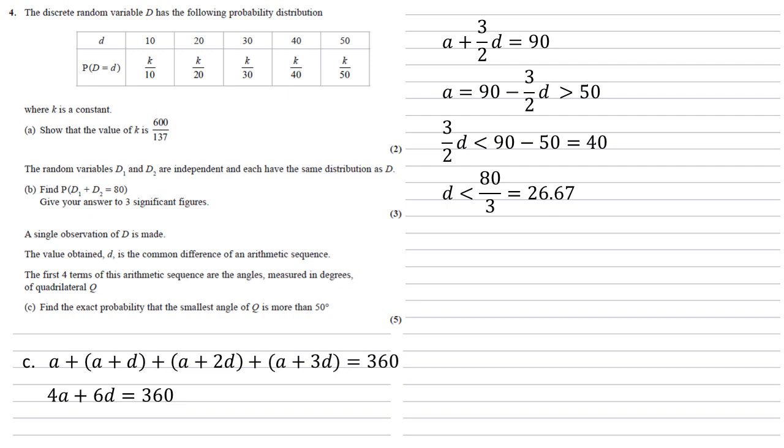There are only two angles that this can then be. So if we look at our table, D has to be 10, 20, 30, 40 or 50. If it's smaller than 26.67, it must be 10 or 20. So we want the probability that D can be 10 or 20.